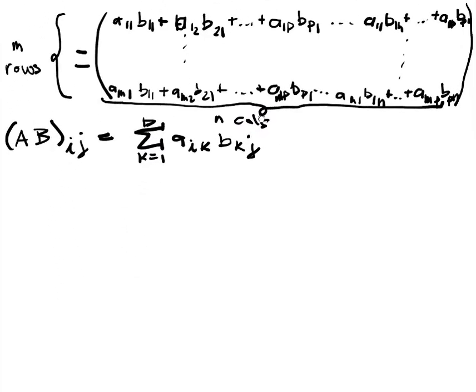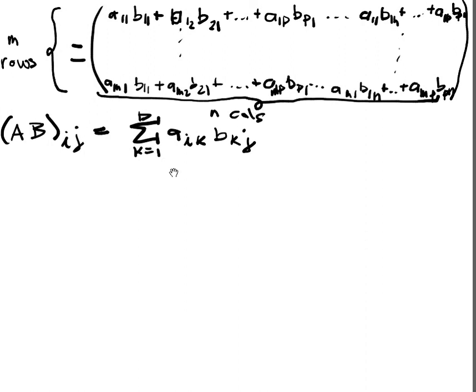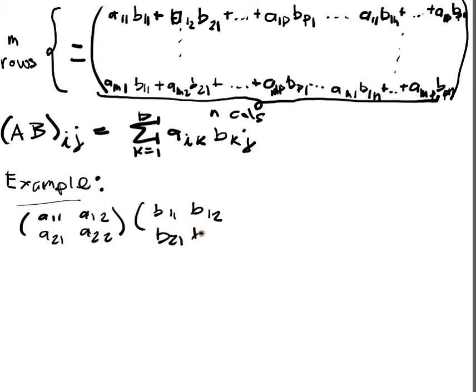So let's do a quick example. Let's do the two by two case, the general two by two case. So A11, A12, A21, A22 multiplied with B11, B12, B21, B22.